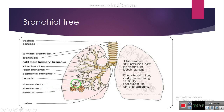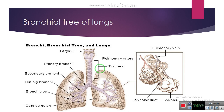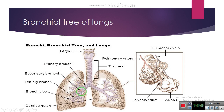The same structures are present in both lungs, so for simplicity only one side is labeled. This is the bronchial tree of the lungs. Here you can see the trachea dividing into primary bronchi, then secondary bronchi, then tertiary bronchi, then bronchioles. The cardiac notch area includes the pulmonary vein, alveoli, alveolar ducts, and a pulmonary artery.